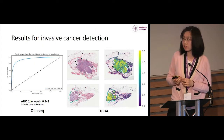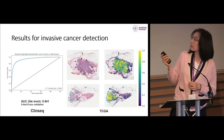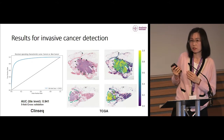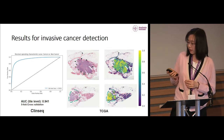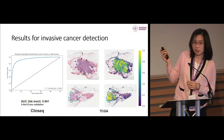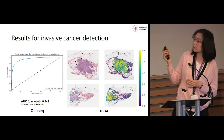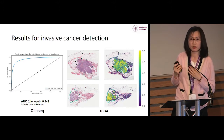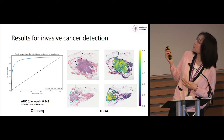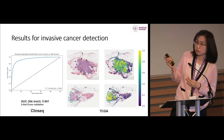For cancer and non-cancer detection, the model achieved an AUC of 0.94 at tile level using our ClinSec data. The images on the right show two examples with pathologist annotations, and the heat map shows the probability of being tumor. Our model predictions match the ground truth quite well.